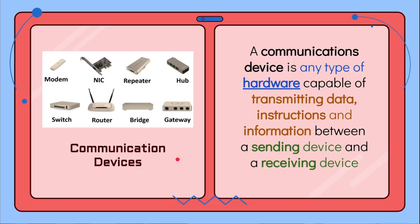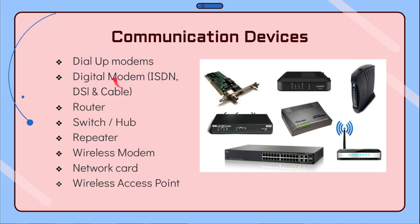A communication device acts as a medium of communication between sending devices and receiving devices. It is essentially any type of hardware. A sending device is any device that wants to transfer or transmit data, instructions, or information, while a receiving device is any device that receives back what the sending device has sent.